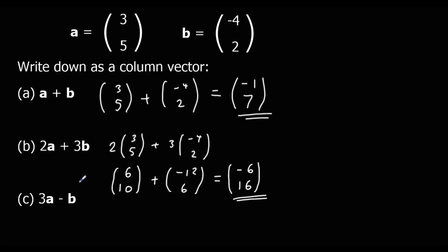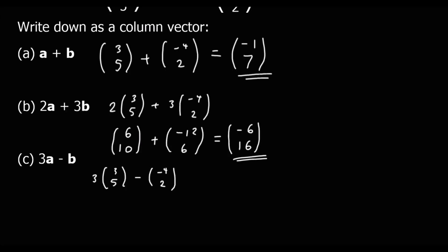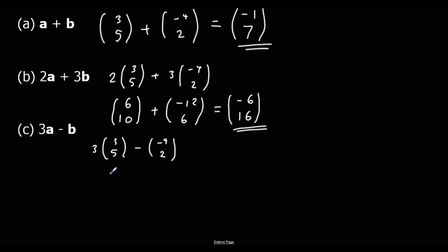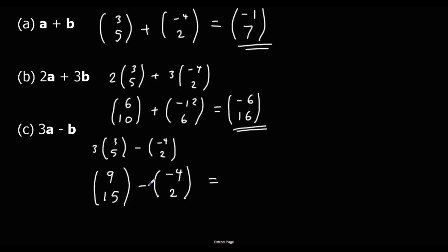And 3a minus b: three of the a's gives nine, fifteen — three threes are nine, three fives are fifteen. Then minus b. Along the top: nine minus minus four, so nine plus four is thirteen. On the bottom: fifteen minus two is thirteen. So 3a minus b equals the column vector thirteen, thirteen.